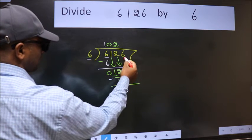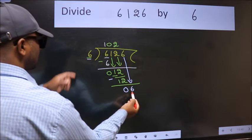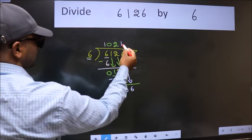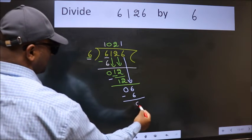After this, bring down the next number. So 6 down. When do we get 6 in the 6 table? 6 once is 6. Now we subtract and get 0.